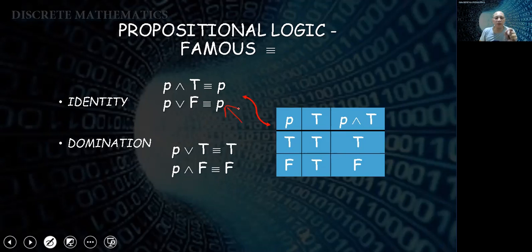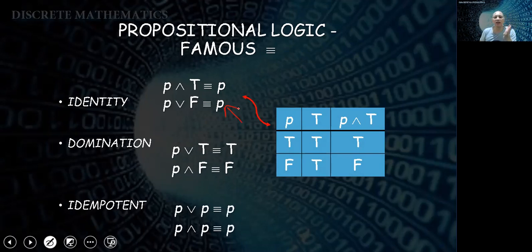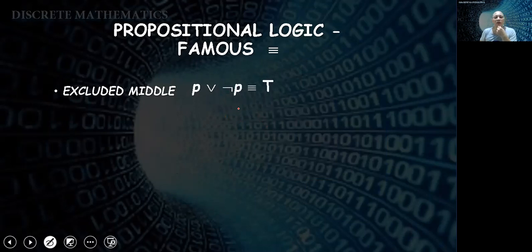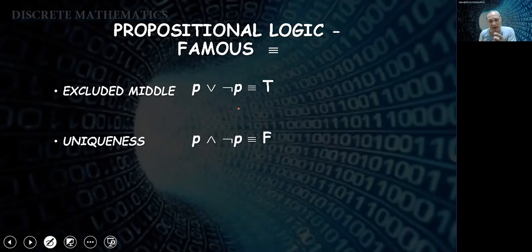Domination: P or true is always true, whatever P is; P and false is always false, whatever P is. Idempotent: P or P equals P, and P and P equals P — since false-or-false is false, true-or-true is true, true-and-true is true, false-and-false is false. Excluded middle: P or not P is always true. Uniqueness: P and not P is always false. Double negation: negating something twice returns to the original proposition.